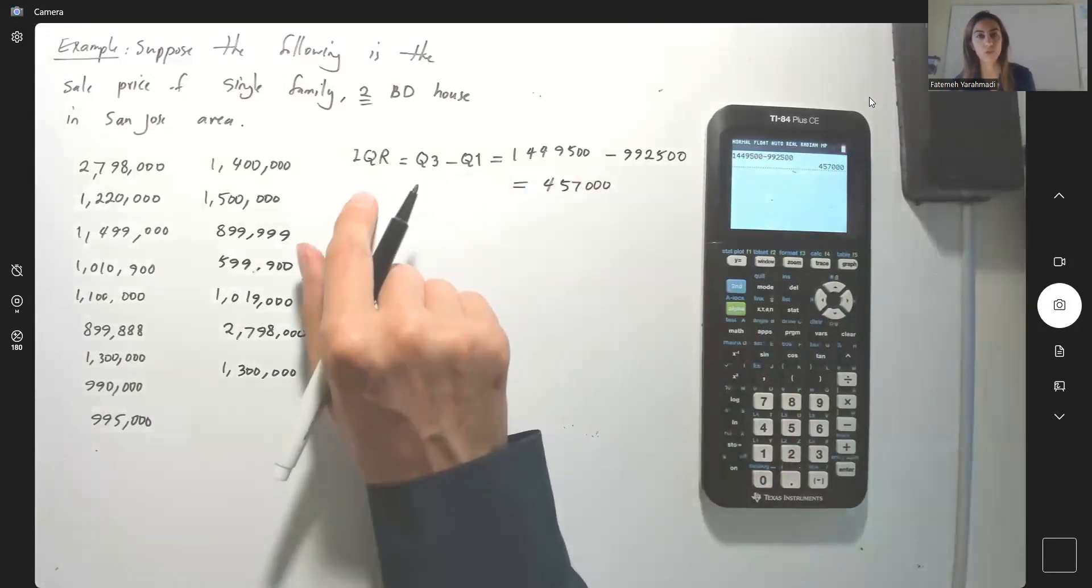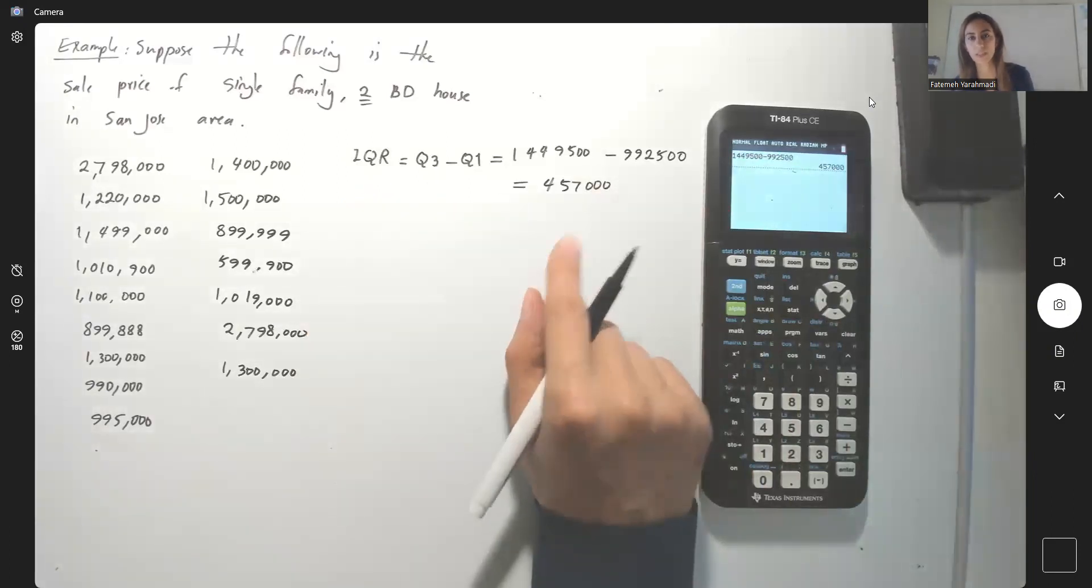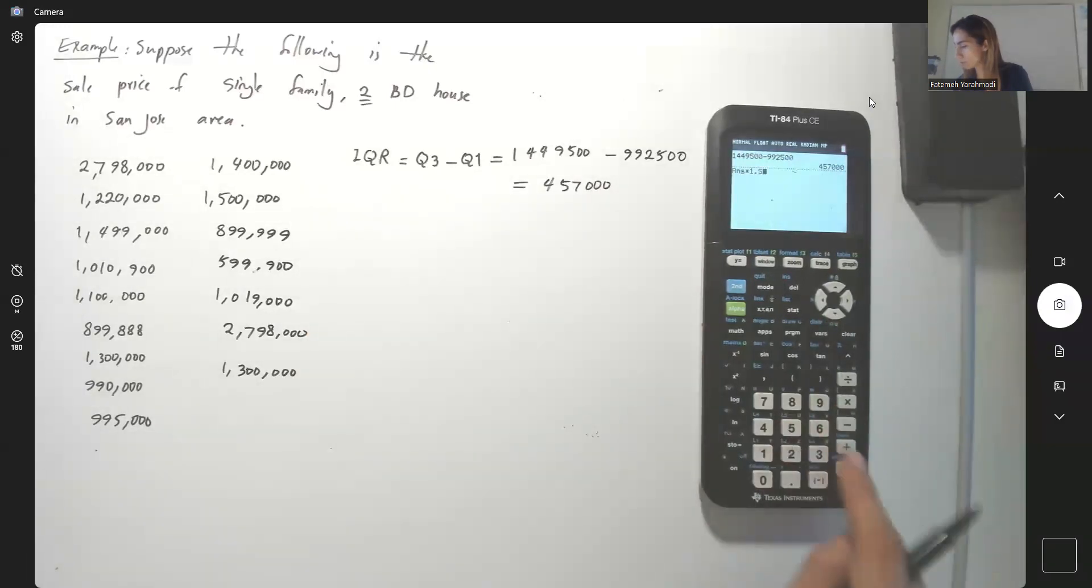457,000 is the interquartile range. Now you're going to take the interquartile range and multiply by 1.5. Multiply that by 1.5.